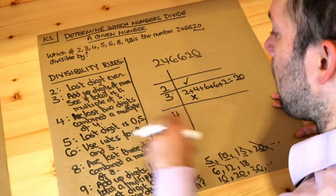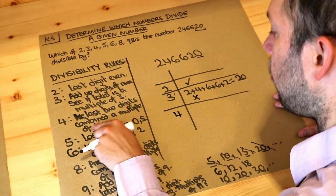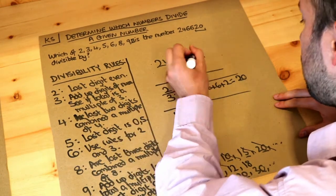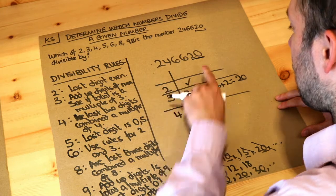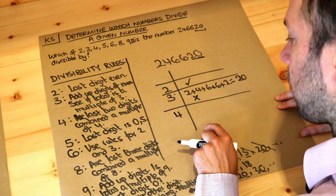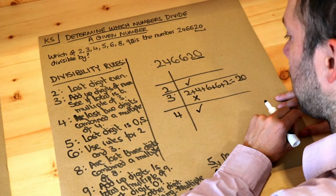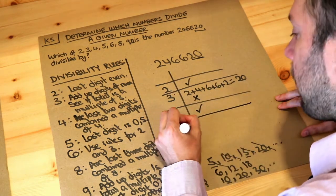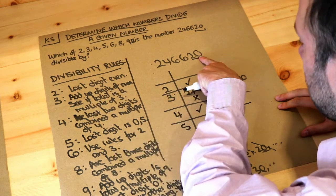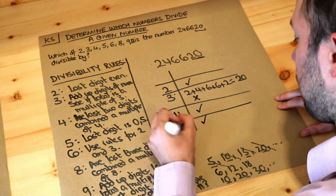What about 4? Remember it says we look at the last two digits combined. So the last two digits are 20. Is 20 in the 4 times table? Yes it is. And therefore this whole number is in the 4 times table. What about 5? Is the last digit 0 or 5? Well yes the last digit is 0. So that is a multiple of 5.